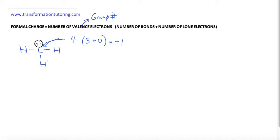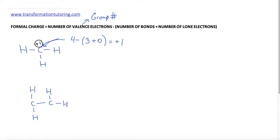We never have to calculate formal charges for hydrogens because a hydrogen has a maximum of one bond and it never has a formal charge. Let's do another example so we can practice even more. Let's say I have a molecule where carbon is attached to 2 hydrogens, and another carbon is attached to 3 hydrogens, and I want to calculate all the formal charges in this molecule.